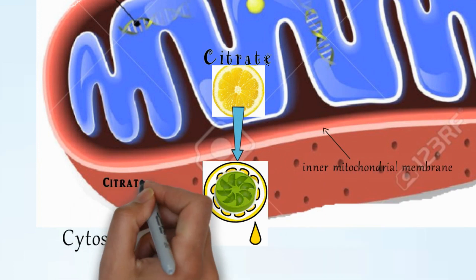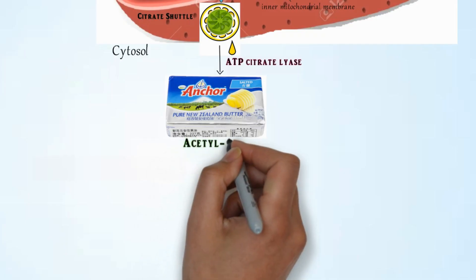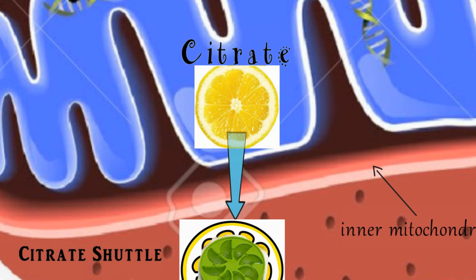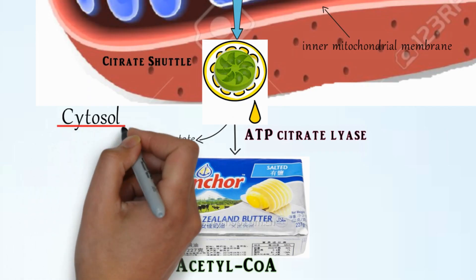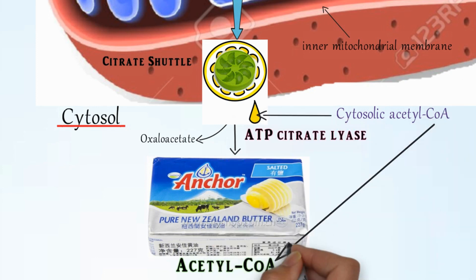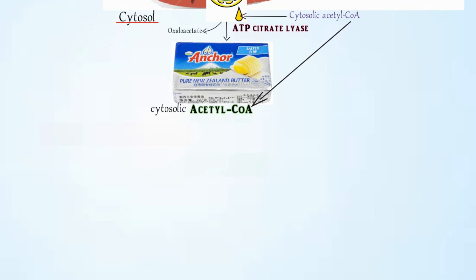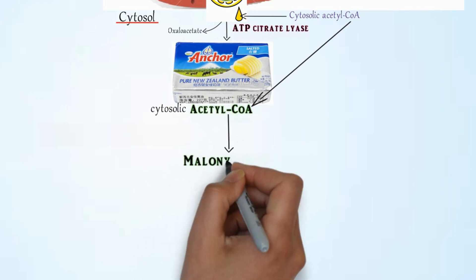In the cytosol, citrate is cleaved by the enzyme ATP citrate lyase into acetyl CoA and oxaloacetate. Imagine citrate is like a lemon where we crush and squeeze it through a lemon grinder — which is the citrate shuttle — and it drips into the cytosol in juice form, giving us cytosolic acetyl CoA.